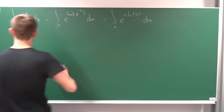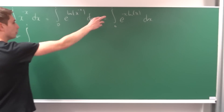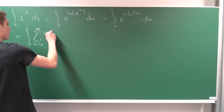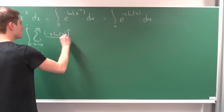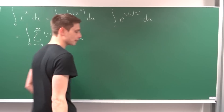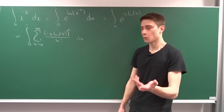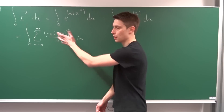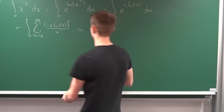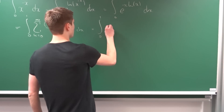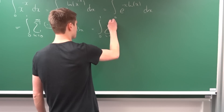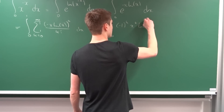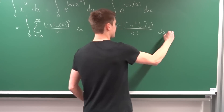Now we can start transforming this into an infinite sum using one definition of the exponential function. This is now equal to the integral from 0 to 1 of the infinite sum from k equals 0 to infinity of (minus x times the natural log of x) to the kth power over k factorial, dx. We can distribute this kth power into everything and bring constants to the outside.